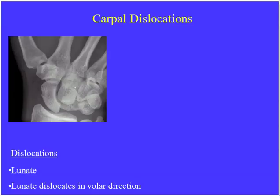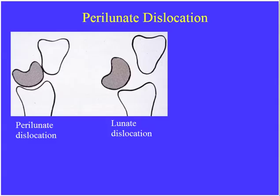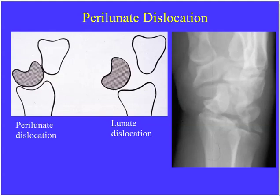They may show a carpal dislocation. On the frontal view, the lunate is typically quadrilateral. When you see a triangular appearance, that represents a lunate dislocation. They may ask you to differentiate between lunate and perilunate dislocation. With lunate dislocation, there's complete dislocation of the lunate anteriorly, while the capitate maintains its normal position. With perilunate dislocation, the lunate maintains its normal position articulating with the distal radius, but the capitate has dislocated posteriorly.